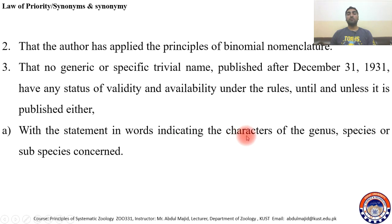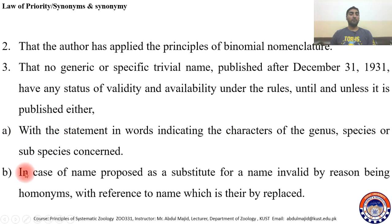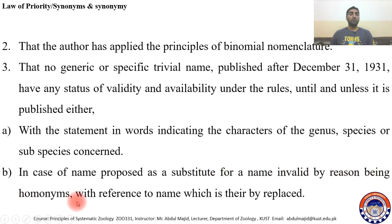The name must be published with a statement in words indicating the characters of the genus, species, or subspecies concerned. Or, in the case of a name proposed as a substitute for a name invalid by reason of being a homonym, with reference to the name which is thereby replaced.